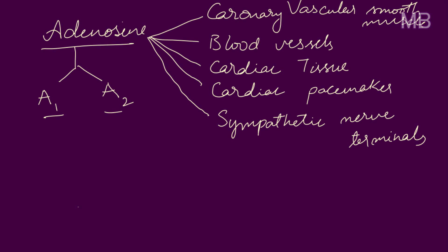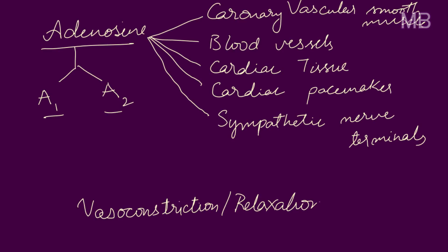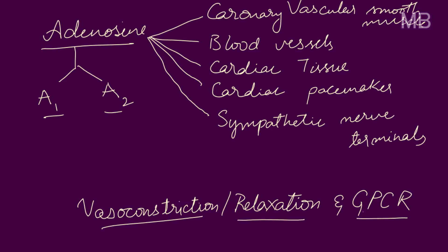Here I am mainly going to discuss vasoconstriction and relaxation, and also different G protein-coupled receptors. If you don't know how vasoconstriction or relaxation occurs, or what G protein-coupled receptors are and their subtypes, you can watch my other video — I am leaving the links in the description below. Continuing this video, we will discuss in detail how adenosine acts on different tissues.